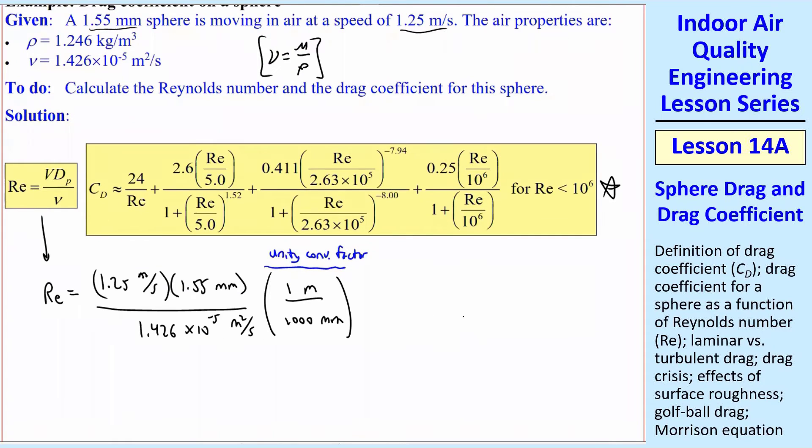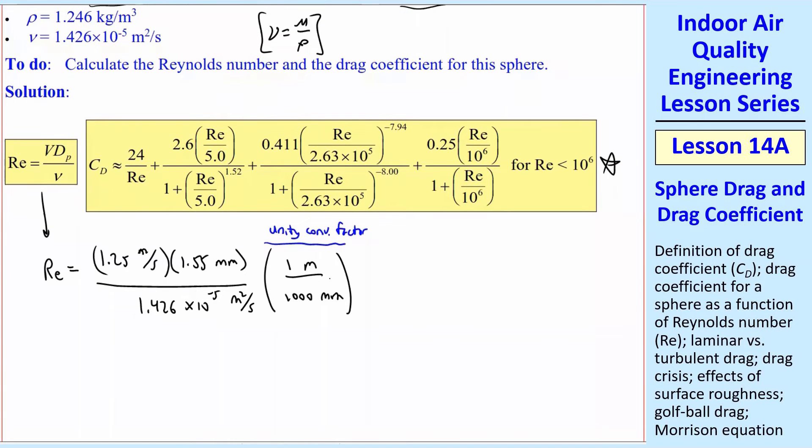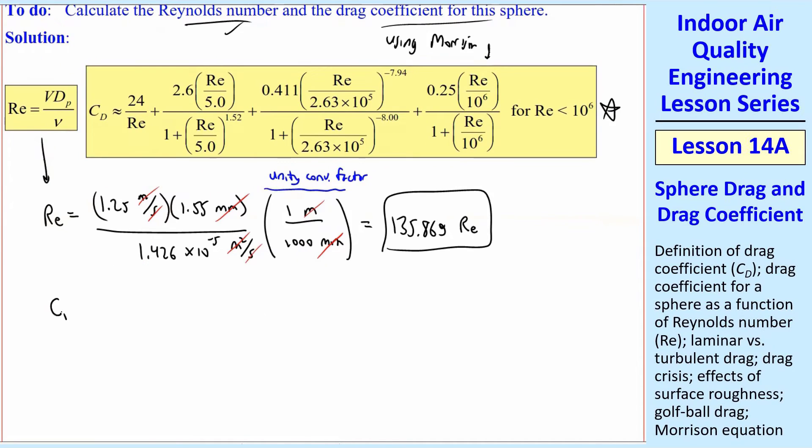So here's Reynolds number and Morrison's equation. So let's start with the Reynolds number. I put in my 1.25 meters per second from up here. I put my 1.55 millimeters and I put my kinematic viscosity. I didn't really need the density in this problem because I had kinematic viscosity. And then I need a conversion factor so that Reynolds number has to be non-dimensional. So since I had millimeters, I used this unity conversion factor. And then you can see I have two meters there and a second in the bottom on each. So this all turns out to be 135.